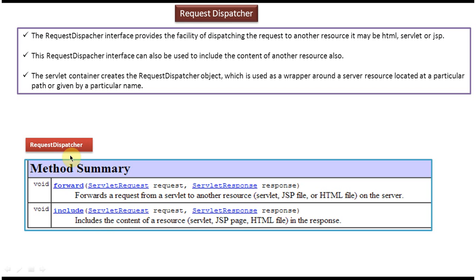The RequestDispatcher interface has two methods. The first method is forward. This method is used to forward the request from a servlet to another resource on the server. The resource can be a servlet, JSP file, or HTML file. It has another method called include. Using this method we can include the content of another resource in the response.